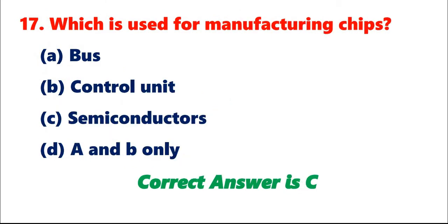Question 17: Which is used for manufacturing chips? A. Bus. B. Control unit. C. Semiconductors. D. A and B only. Correct answer is C.